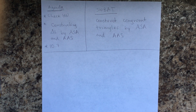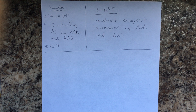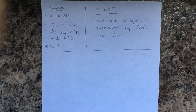Hello students, today's agenda is to check homework. We'll be constructing triangles by ASA — angle side angle — and angle angle side. Students will be able to construct congruent triangles by angle side angle and angle angle side.